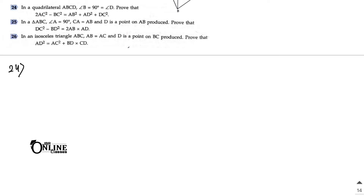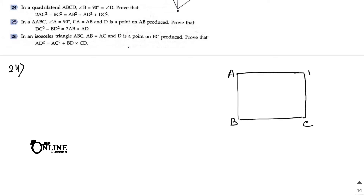Next, sum number 24: in a quadrilateral ABCD, angle B = 90° and angle D = 90°. Prove that 2AC² = AB² + BC² + AD² + DC². First, draw diagonal AC.